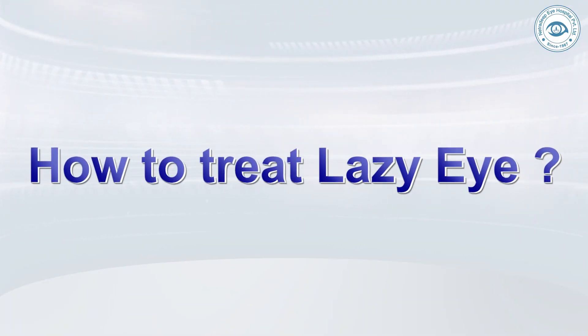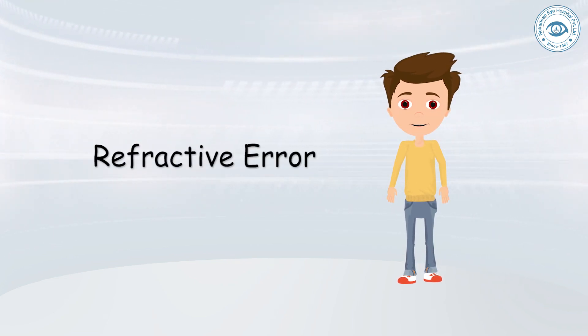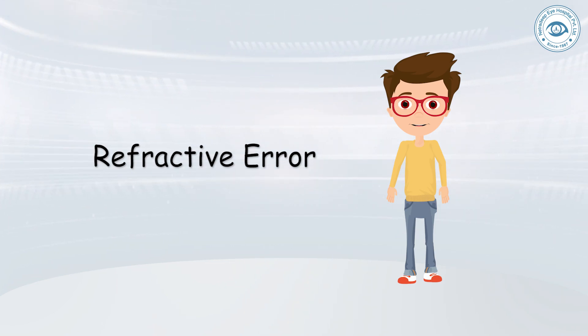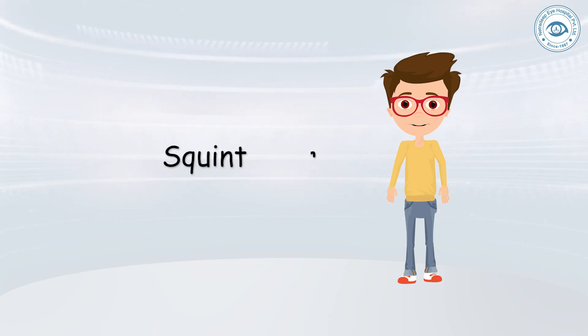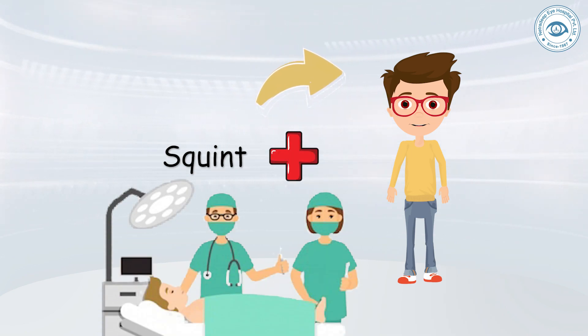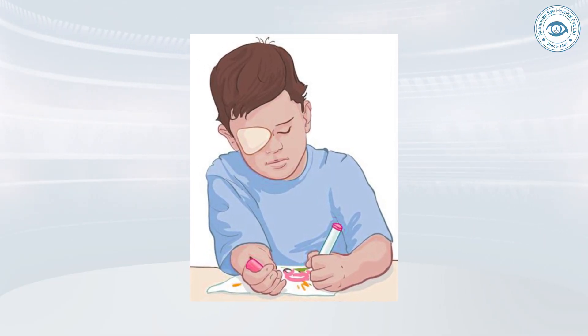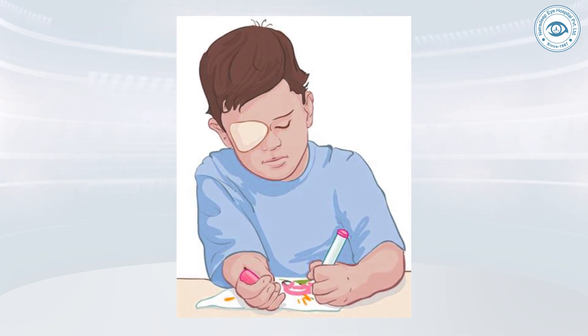If the underlying cause for lazy eye is a refractive error, then prescribing glasses and constant wear of glasses will help in improving lazy eyes. If the underlying cause is squint, then prescribing glasses and squint surgery is required, followed by amblyopia therapy if needed. The most traditional and most effective way for managing lazy eyes, which I also recommend, is patching. In patching, we close the good eye and force the poor eye to see for a few hours a day.